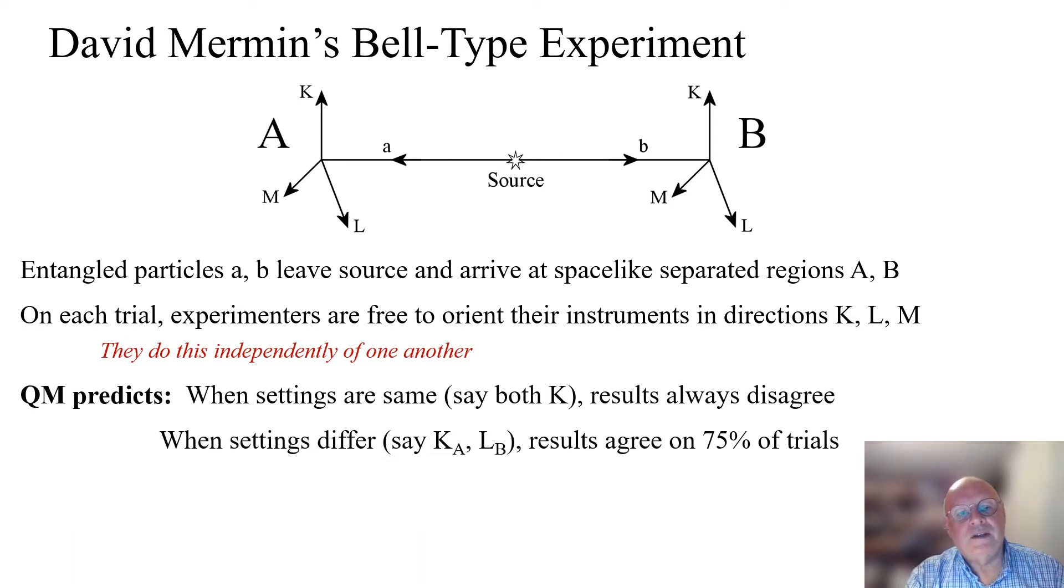Quantum mechanics predicts that when the settings are the same, say both K, then the results will always disagree. But when the settings differ, say the setting at A is K and the setting at B is L, then the results agree on 75% of the trials.